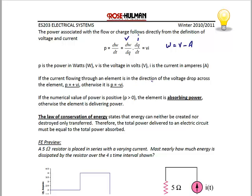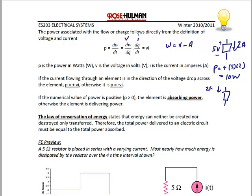If the current flowing through an element is in the direction of the voltage drop, or if the element obeys the passive sign convention, then the power equals positive v times i; otherwise the power equals negative v times i. For example, if I have 5 volts across an element and 2 amps flowing through it in the passive sign convention direction, power equals positive 5 times 2. However, if the element does not obey the passive sign convention with 2 amps and negative 5 volts, then power equals negative 5 times 2, which is negative 10 watts.